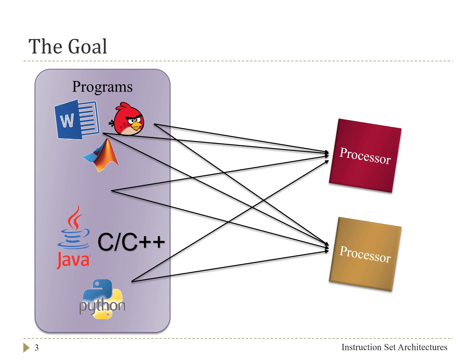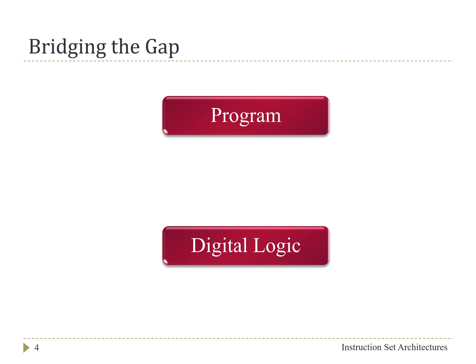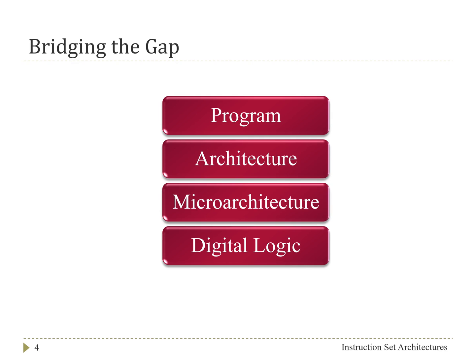The challenge is how do we take programs written once and allow them to be executed on processors that could be very different. While theoretically we could create different versions of programs for each different type of processor, with multiple different processor types developed over multiple generations and decades, it becomes difficult — in reality probably impossible — to maintain different versions of a program for different processors. The way we bridge this gap is through a combination of what's referred to as the architecture and the microarchitecture.